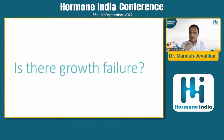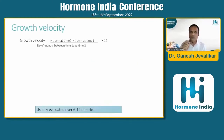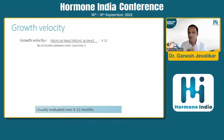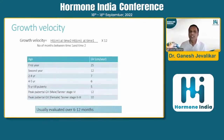To address whether there is growth failure, we must understand growth velocity — the difference in height measured over two time points, divided by the number of months between them. For example, if a child gains three centimeters in six months: 3 ÷ 6 × 12 = 6 centimeters per year. Normal values are available in textbooks and publications, but importantly, children do not grow uniformly.